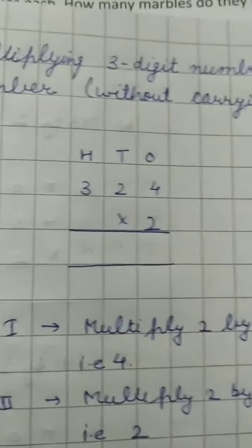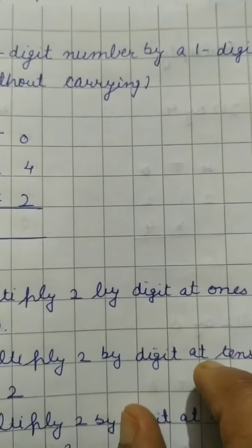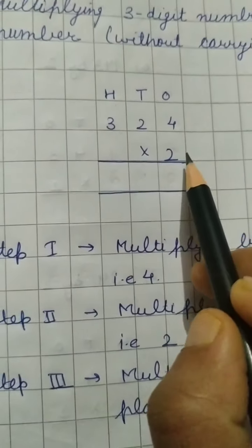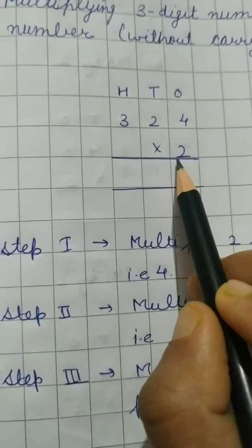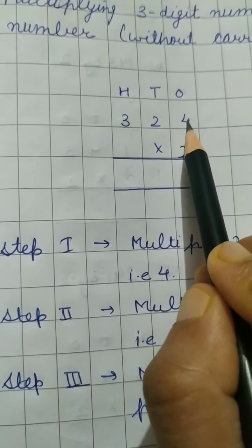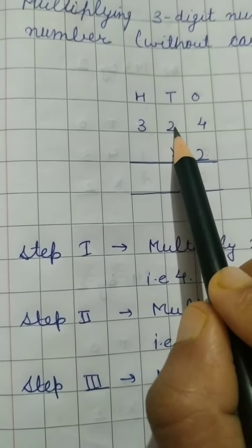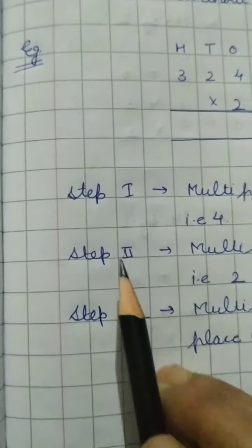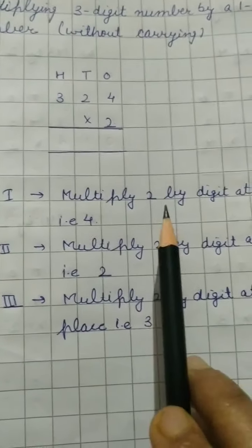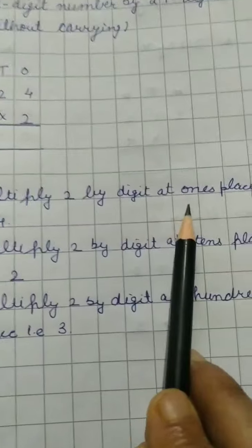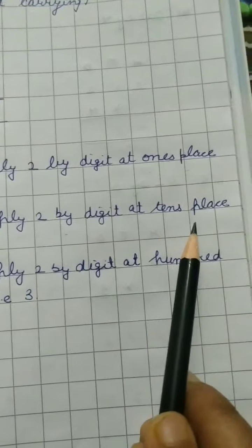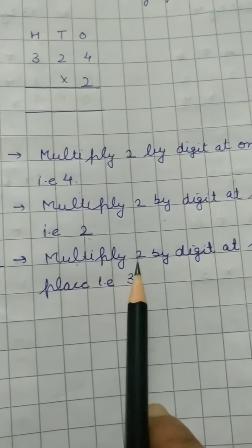Next is multiplying a three-digit number with a one-digit number, first without carry. The working rule is: we have to speak the table of the multiplier. First we multiply with the digit at the ones place, then the digit at the tens place, then the digit at the hundreds place. Step one: multiply by the digit at ones place; step two: multiply by the digit at tens place; step three: multiply by the digit at hundreds place.